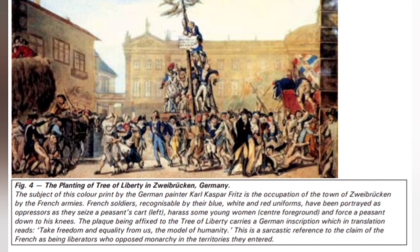Figure 4: The Planting of the Tree of Liberty in Zweibrücken, Germany. The subject of this color print by the German painter Carl Caspar Fritz is the occupation of the town of Zweibrücken by the French armies. French soldiers, recognizable by their blue, white, and red uniforms, have been portrayed as oppressors. The plague being affixed to the Tree of Liberty carries a German inscription which in translation reads: 'Take freedom and equality from us' — a sarcastic reference to the claim of the French as being liberators who opposed monarchy in the territories they entered.